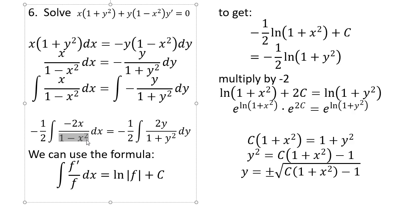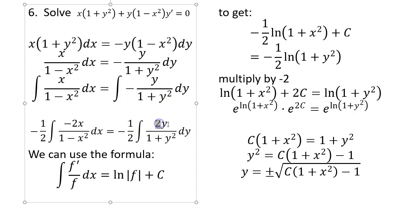For 1 − x², if you differentiate it you get −2x. You want −2x on top, but you only have x. Since −2 is just a constant multiple, you can put it there and balance it by putting −½ in front. Similarly, since the derivative of y² is 2y, I put a ½ in front to balance. This formula makes the integral easy — you now get the log expressions on each side.